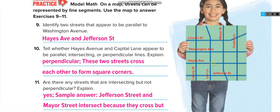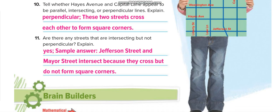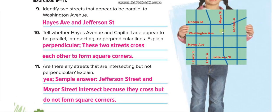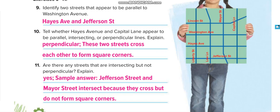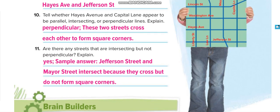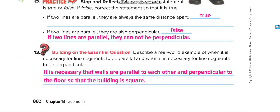Hayes Avenue and Capitol Lane are perpendicular to each other. Are there any streets that are intersecting? Yes — Jefferson Street and Mayor Street are intersecting at one point. I hope you understand.